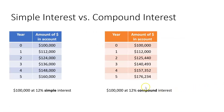Simple interest is on the left over here. We have $100,000 at 12% simple annual interest. If you put $100,000 in an account, 12% of that would be $12,000. With simple interest, we add $12,000 every year. And so, at the end of five years, there would be $160,000 in the account — assuming you're not putting any other money in.